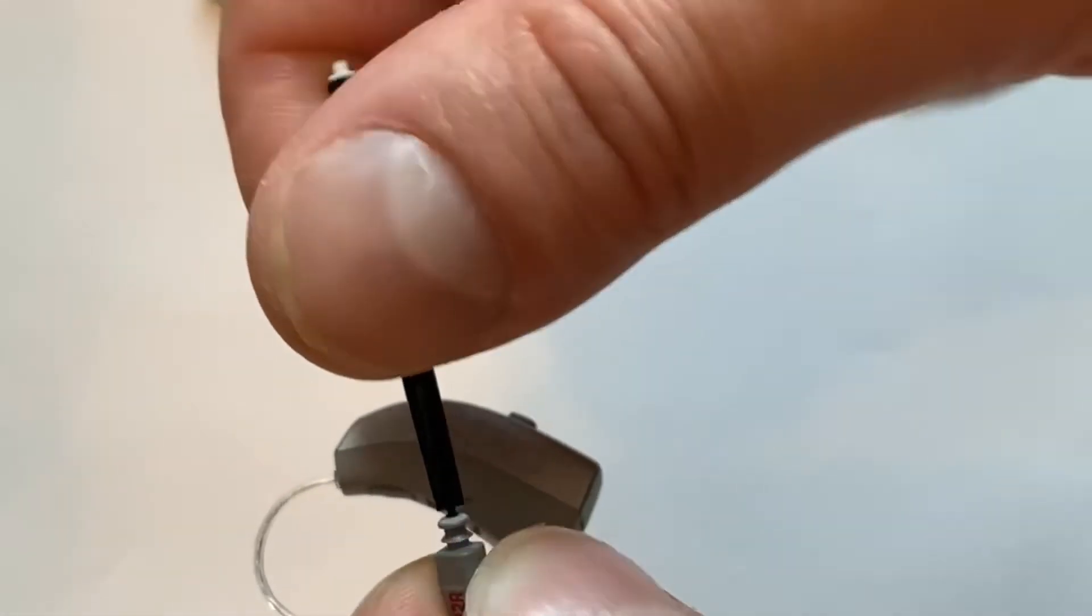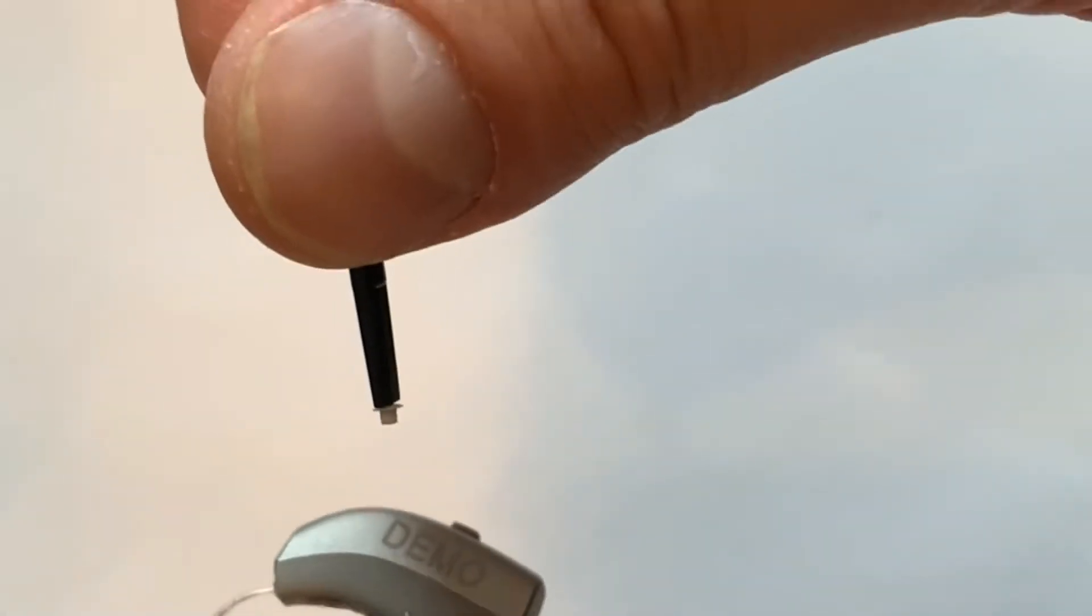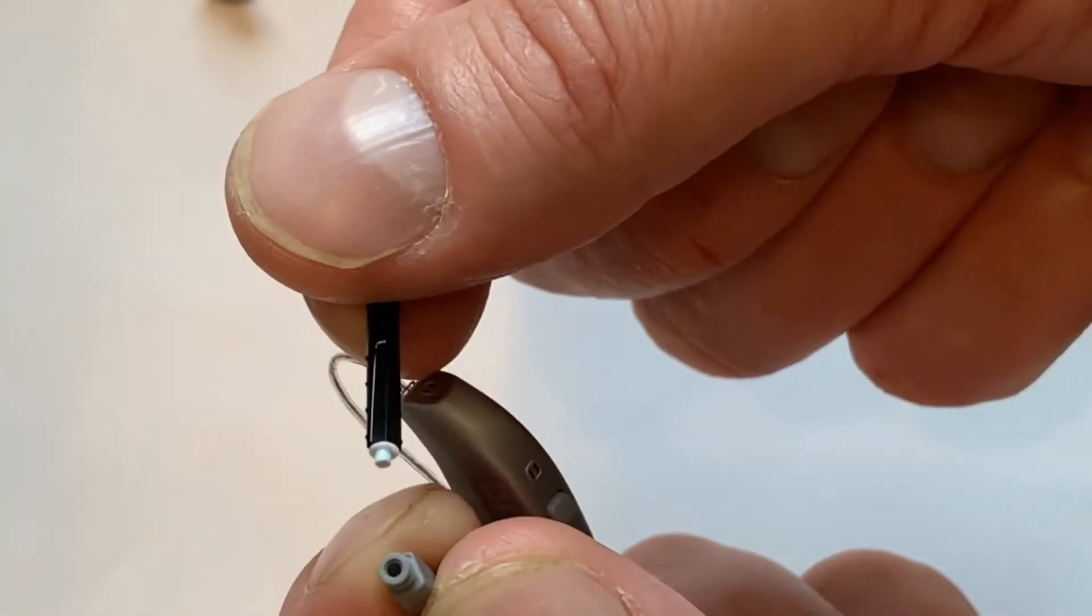It's important. You do not want to pry. You want to go straight in. It sort of clicks into position, then pull straight out. And you can see now that I've removed the old wax guard.